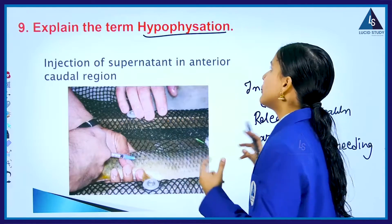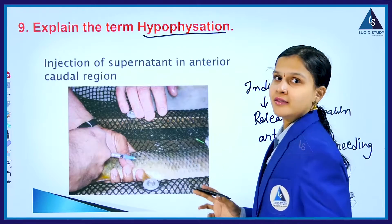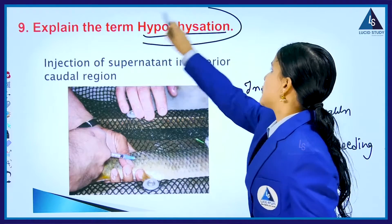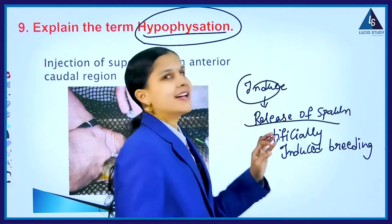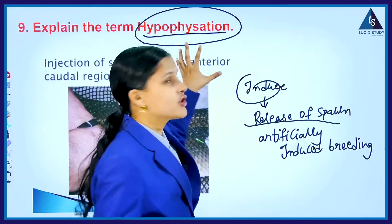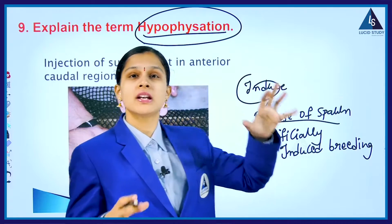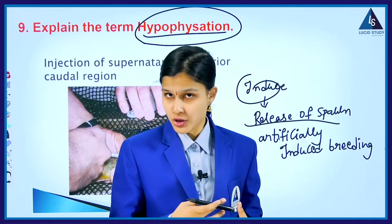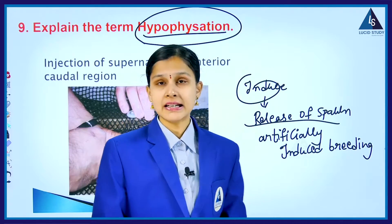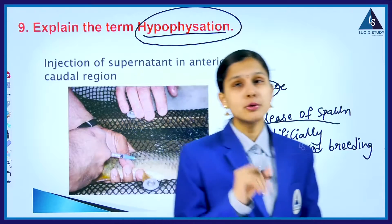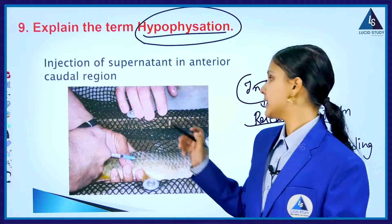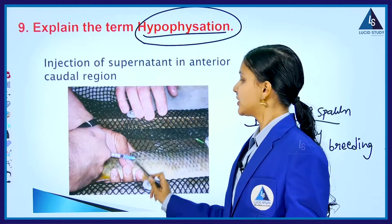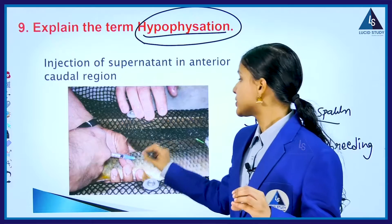Explain the term hypophysation. Hypophysation is a technique which is used in artificial breeding. In this particular technique, gonadotropin is extracted and it is injected into the fishes.